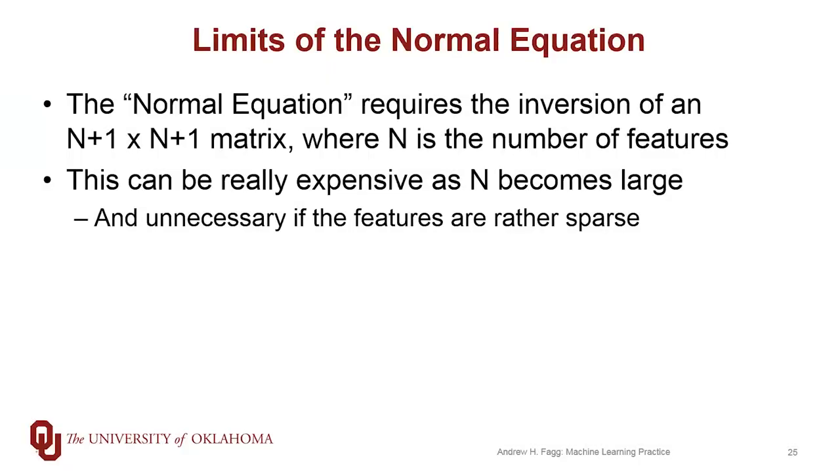We've already been using this normal equation and it has some limitations. In particular, in order to solve for the parameters of the model, we have to go through this process of inverting essentially an n by n matrix where n is the number of input features that we have.